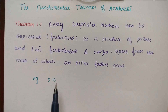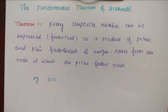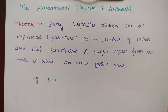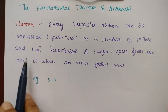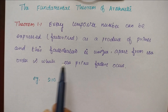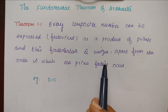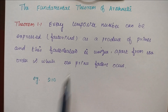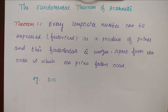So in the theorem, the statement is: every composite number — composite number means it has more than two factors — every composite number can be expressed as a product of primes, and this factorization is unique apart from the order in which the prime factors occur.